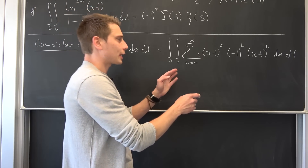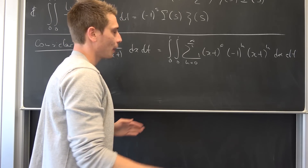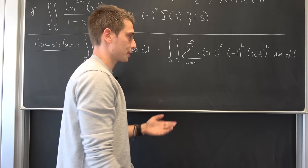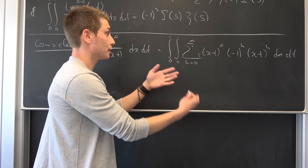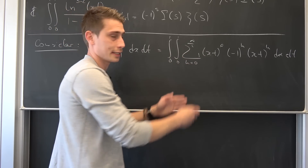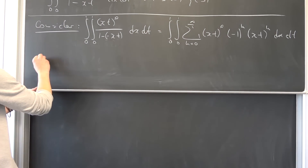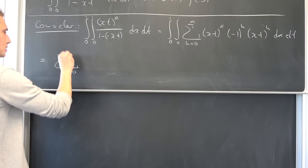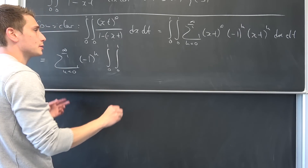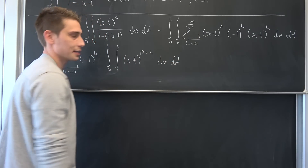Here's the thing: at first we can bring those two together to get x times t to the p plus k-th power. Also, in the radius of convergence our geometric series converges uniformly, meaning we can simply interchange the limit and those integrals without any restrictions. Also, we can bring negative 1 to the k-th power to the outside since it's just a constant. So we are going to end up with a sum running from k equals 0 to infinity of negative 1 to the k-th power, times the double integral from 0 to 1, 0 to 1, of x times t to the p plus k-th power, dx dt.